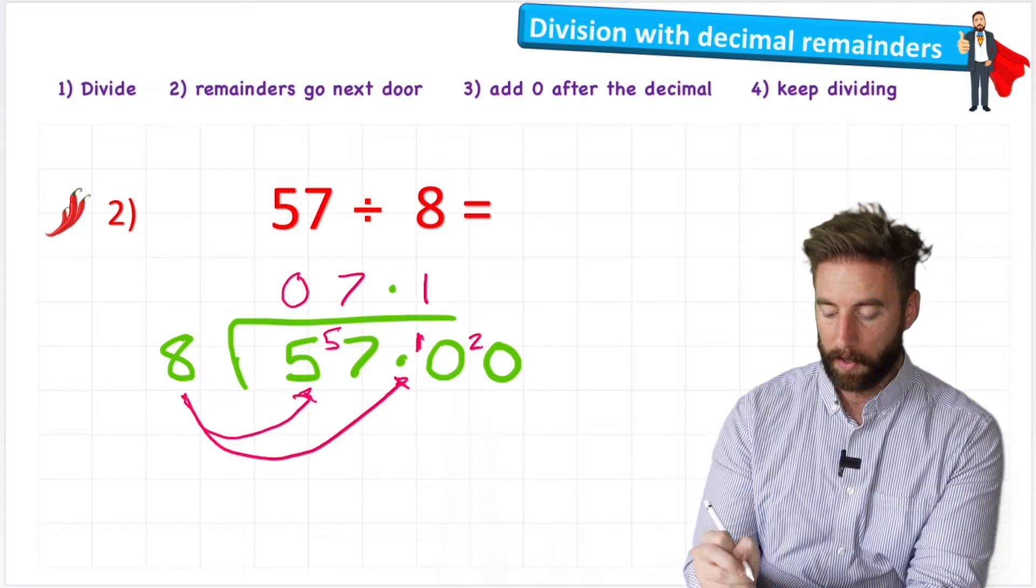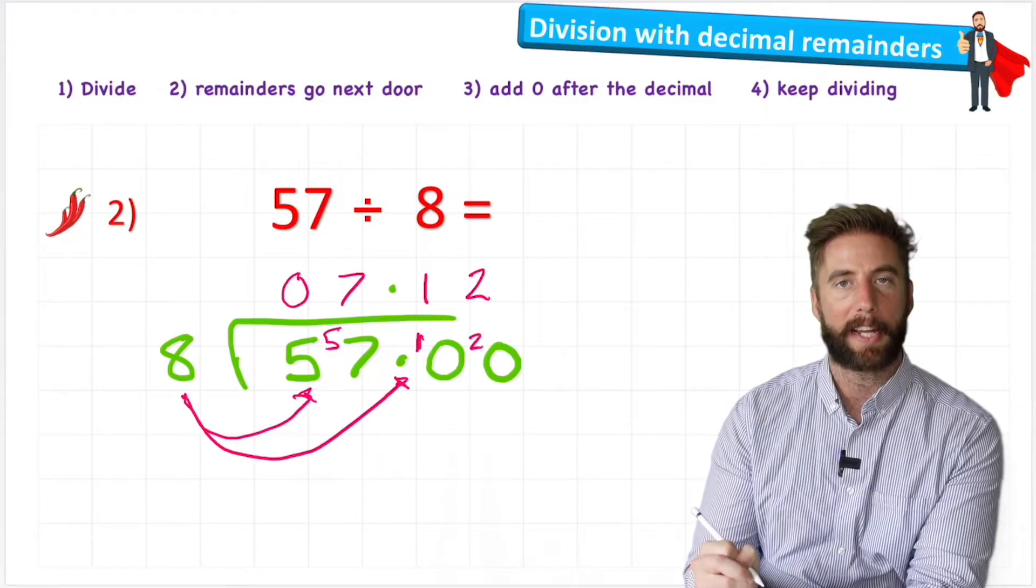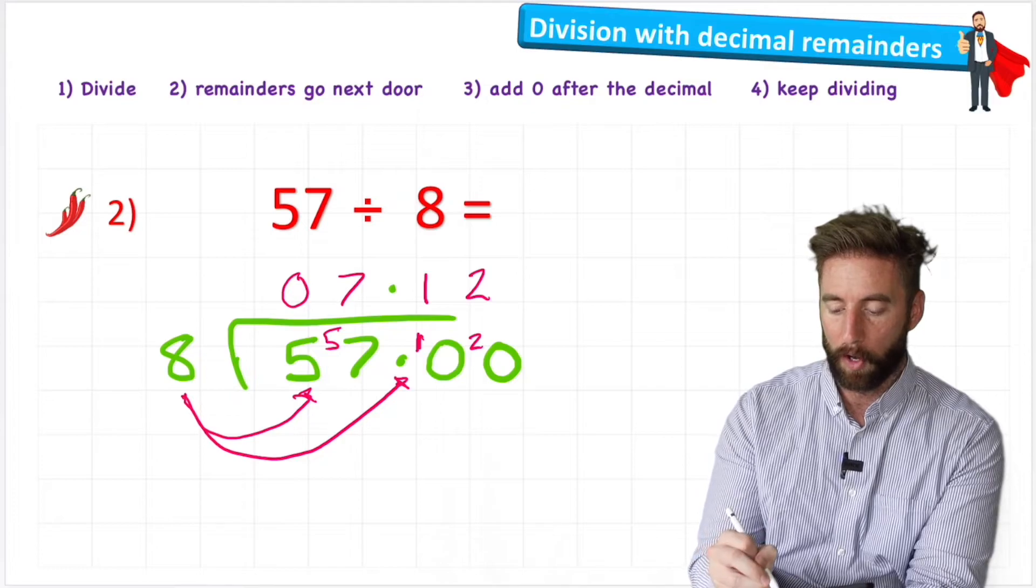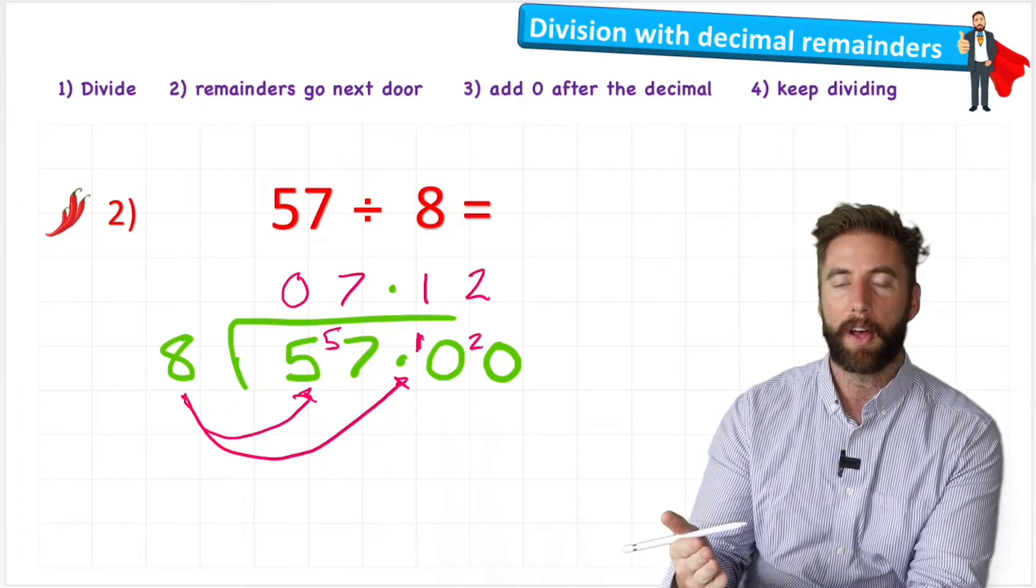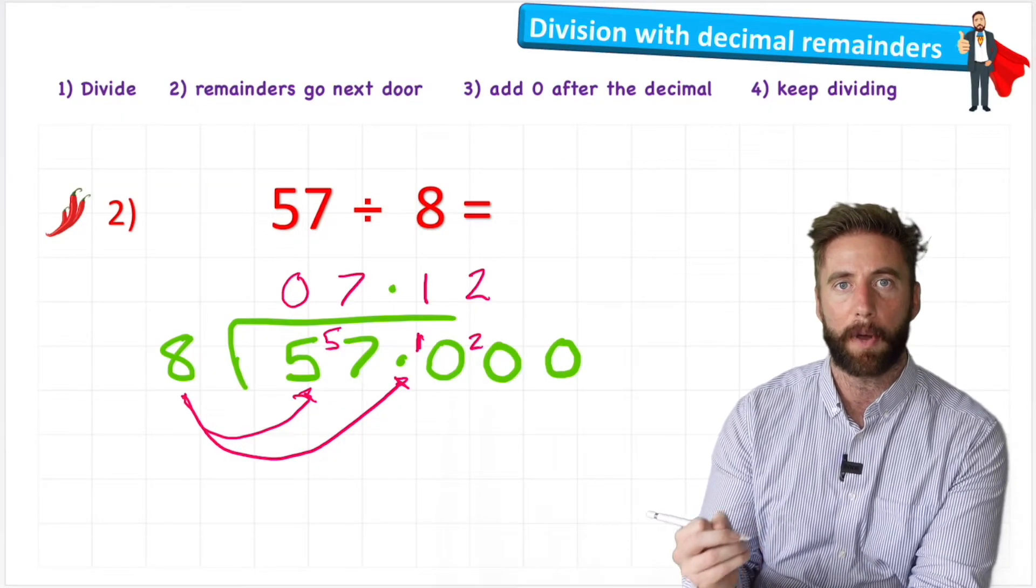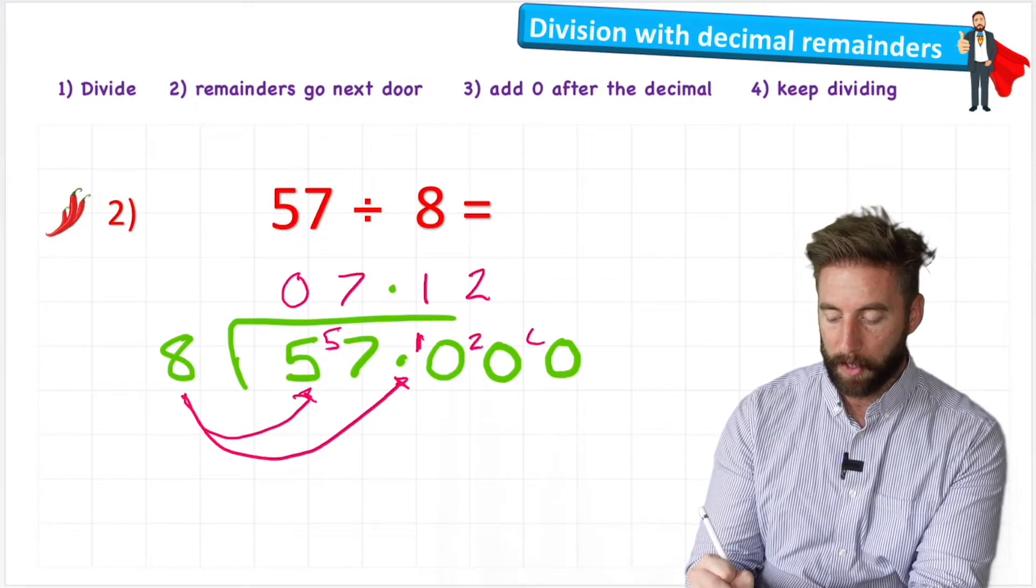How many eights are there in 20? Well, there's two, I can get to 16. But oh my gosh, I have another remainder. I have to use another zero. Remember, none of these zeros are changing the value of my number. Now I can put the four in front of it again, and ask what I think will be the final question.